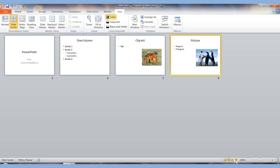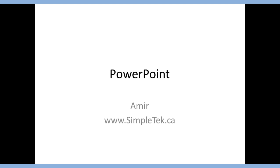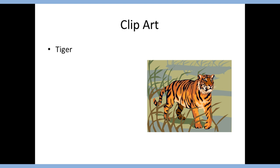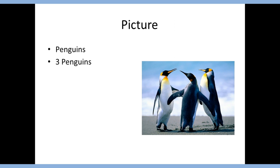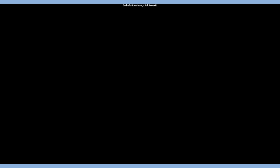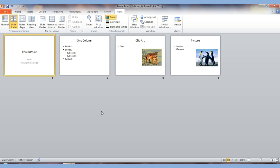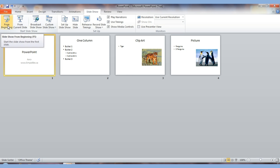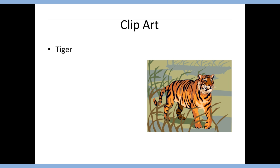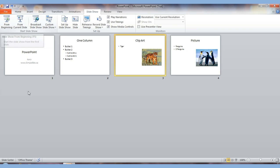The Normal, Slide Sorter, and Notes Page buttons are also available in the bottom-right corner. The last one is the Slideshow view, which starts the slideshow. I click on the first slide and click that button. Now this is what my slideshow looks like. I can hit the Enter key, or the down or right arrow keys to advance slides, and the up or left arrows to go back. You can also start the slideshow from the Slideshow menu at the top by choosing 'From Beginning.' Hit Escape to exit the presentation.